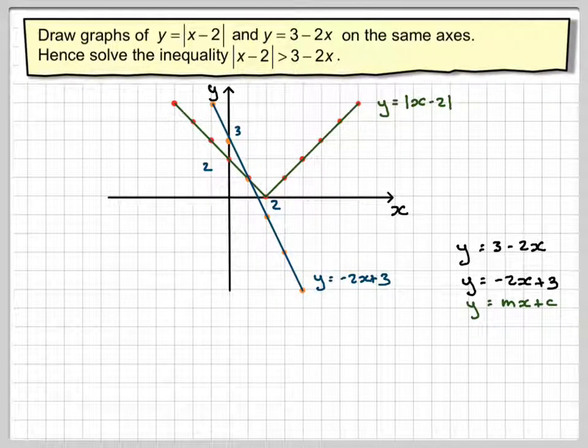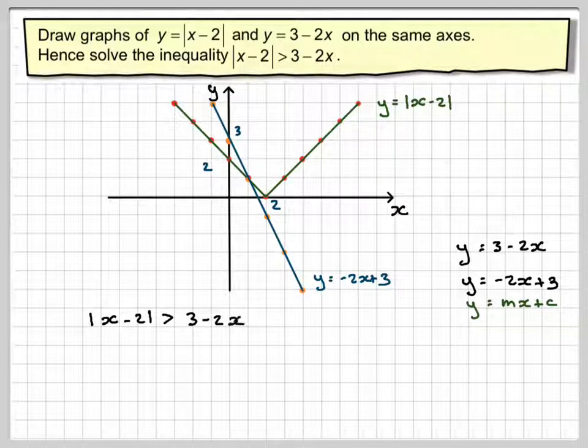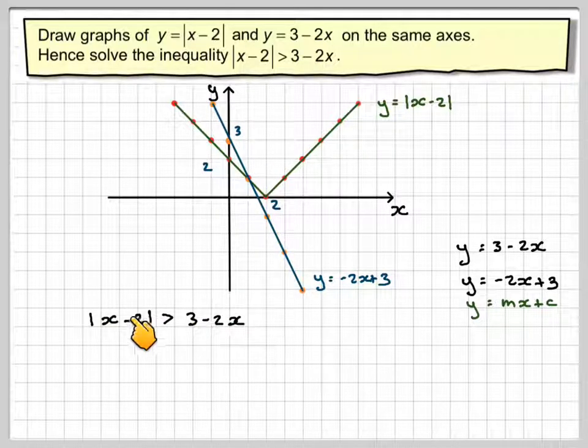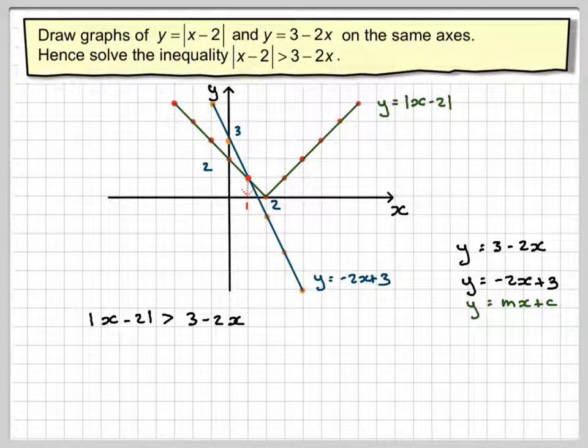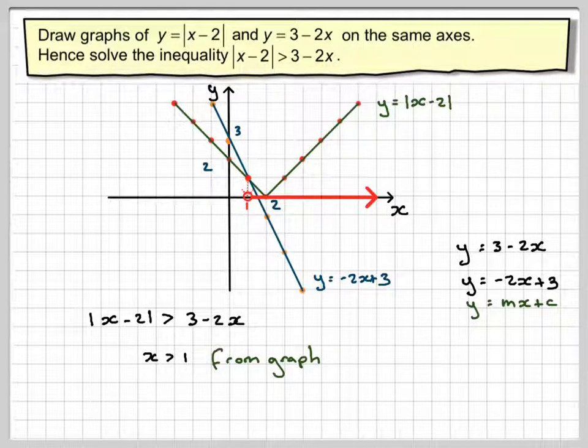The crucial point in solving the inequality is where do these two actually intersect? They intersect at this point at x equals 1. Now where is this greater than 3 minus 2x? So where is the y value of this greater than the y value of 3 minus 2x? Well, all the way here we can see that this graph here is above this one, so it's going to be any value of x greater than 1 from the graph. So this is just a graphical method for solving this question. I hope you've understood, and I thank you very much for watching.